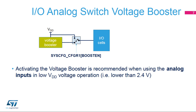The STM32G0 supports a voltage booster that should be used when the analog inputs operate at low VDD voltage. It is activated by setting the BOOST_EN bit in the SYSCFG CFGR1 register.